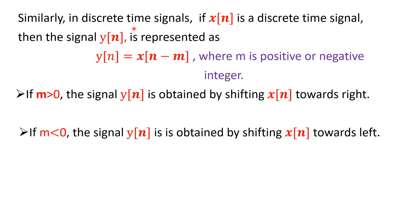Similarly, in discrete time signals, if x(n) is a discrete time signal, then y(n) is represented as y(n) = x(n − m), where m is a positive or negative integer. If m value is greater than 0, then y(n) is obtained by shifting x(n) towards the right. If m value is less than 0, then y(n) is the shifted version of x(n) towards the left.